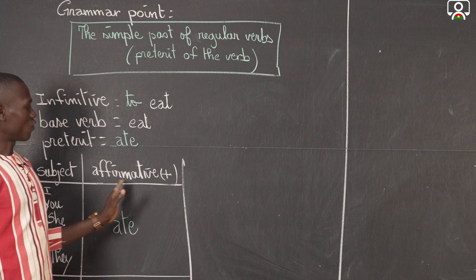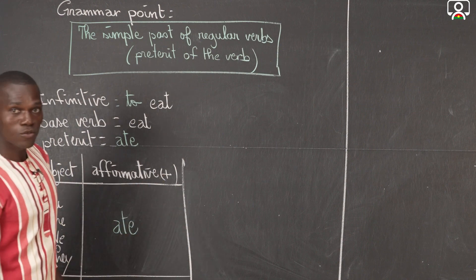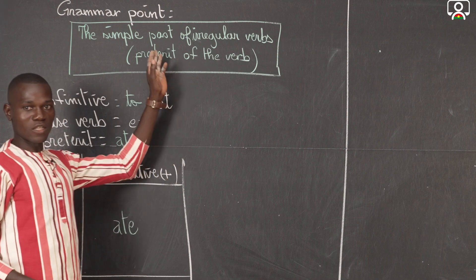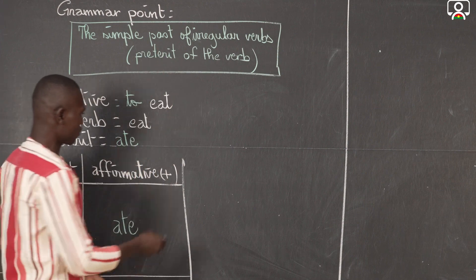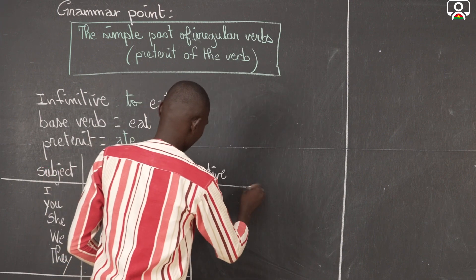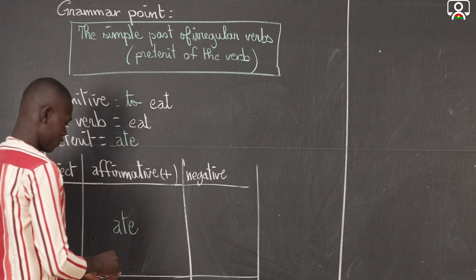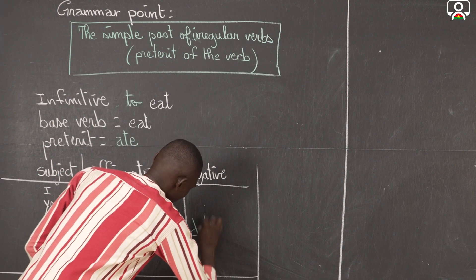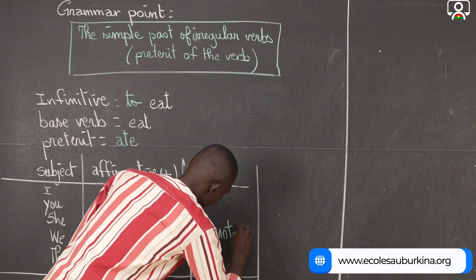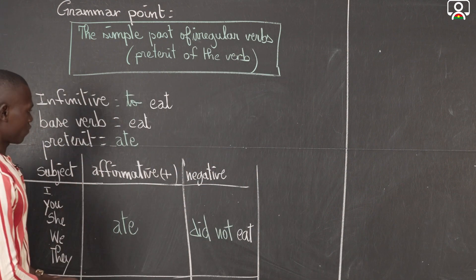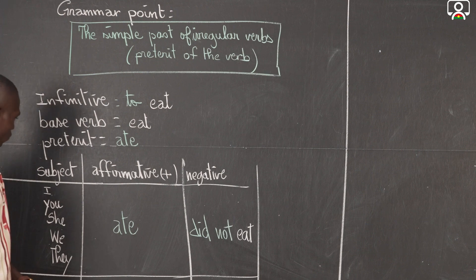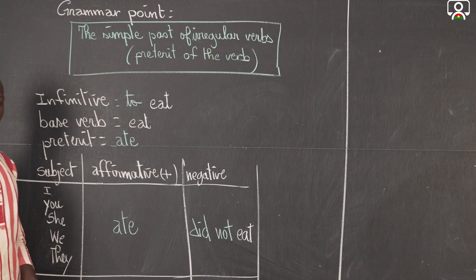Now we are going to continue with the negative form. In the negative, the auxiliary is DID plus NOT plus the base verb. So you say: I did not eat, you did not eat, she did not eat, we did not eat, and they did not eat.